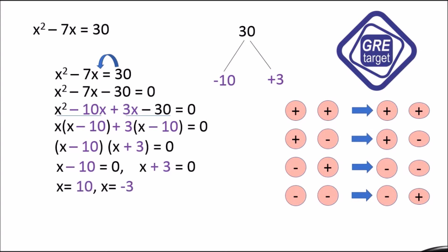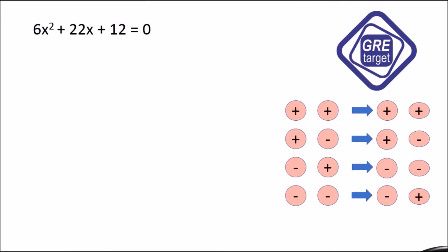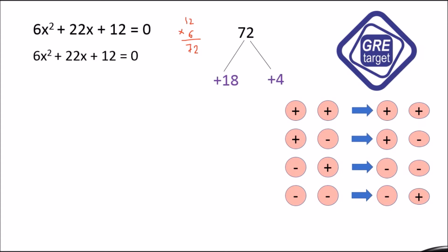So x - 10 = 0 gives x = 10, and x + 3 = 0 gives x = -3. Let's solve another example: 6x² + 22x + 12 = 0. We find the multiplication of 6 and 12, which is 72. Both values are positive, and 18 × 4 = 72, with 18 + 4 = 22. So we get 6x² + 18x + 4x + 12 = 0, where 18x + 4x = 22x.